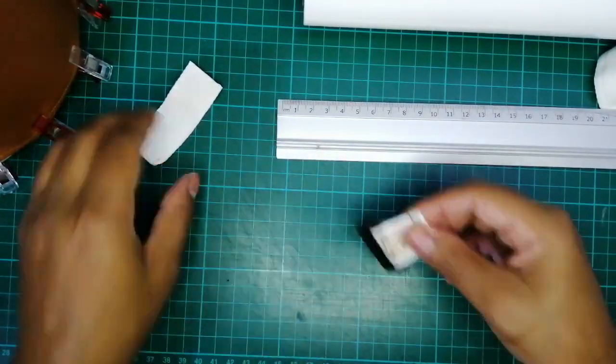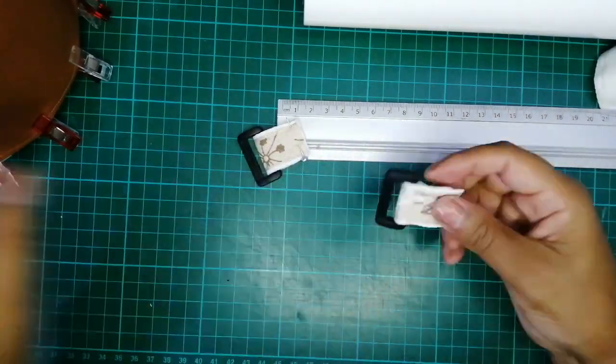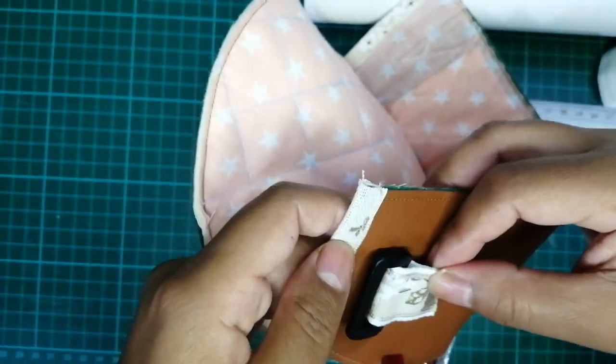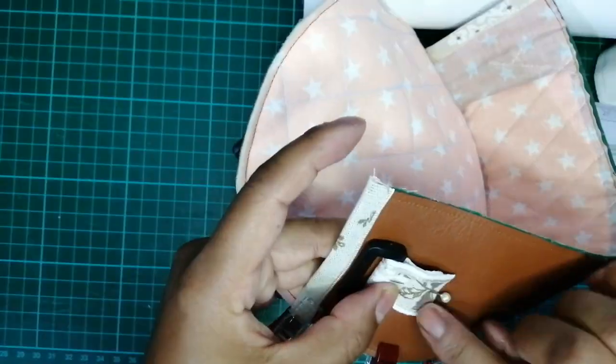If I were to make this bag again, I would sew these buckles higher up the sides. This is because when the buckles are too low, the bag will end up flipping upside down when in use.